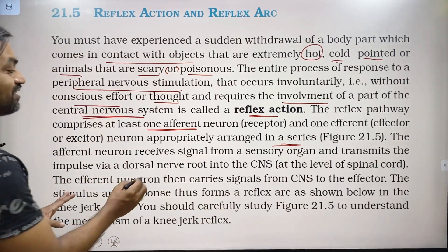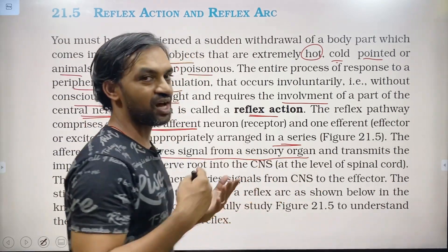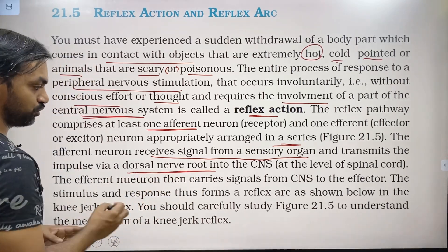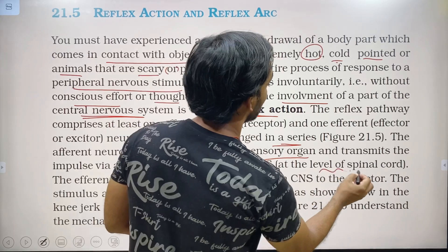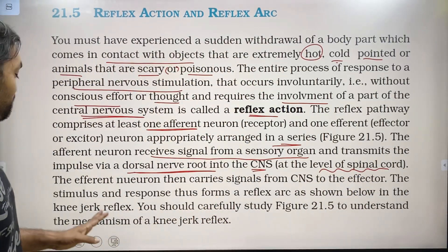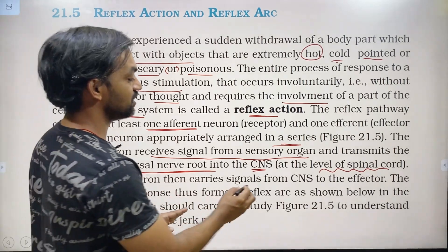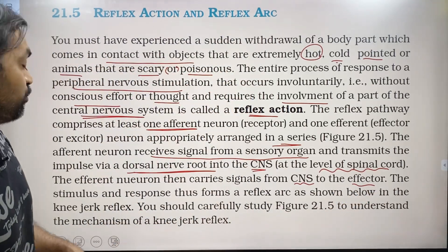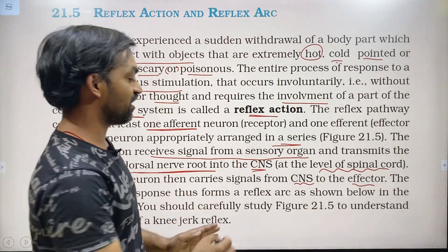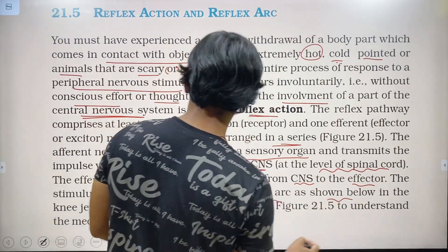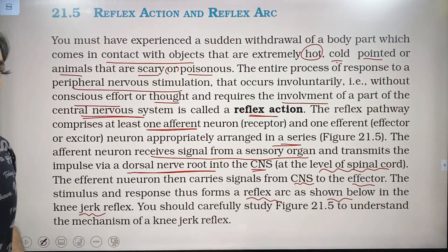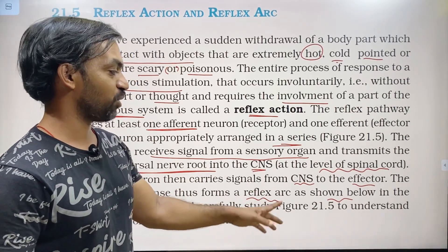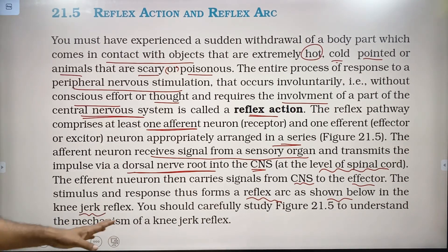The afferent neuron receives signals from sensory organs and transmits the impulse via the dorsal nerve root into the CNS at the level of the spinal cord. The stimulus and response thus form a reflex arc, as shown in the knee jerk reflex. You should carefully study figure 21.5 to understand the mechanism of the knee jerk reflex.